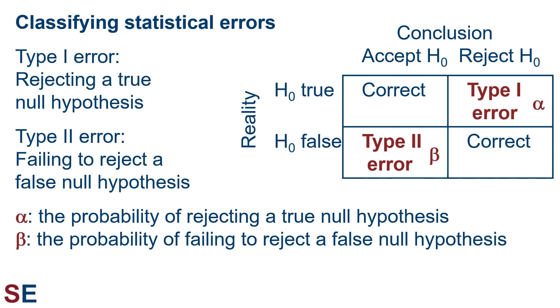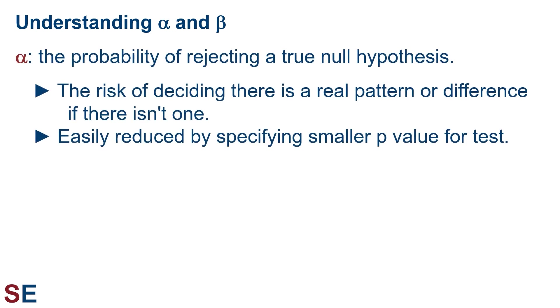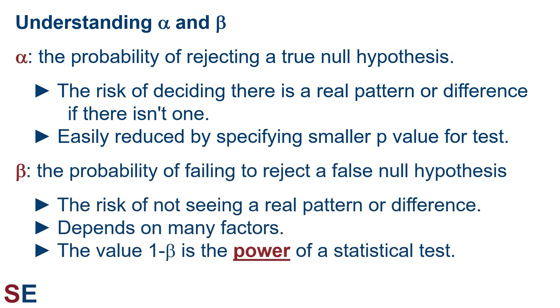Beta is the probability of failing to reject a false null hypothesis. This can be very important because it tells us what our chance of seeing a real pattern in the data is. Alpha is the risk of deciding that there is a real pattern or difference if there isn't one — like testing a useless drug and deciding it was useful. Reducing this risk can be done by specifying a smaller p-value threshold, usually set at 5%. Beta is the risk of not seeing a real pattern if there is one — like testing a useful drug and deciding it wasn't useful.